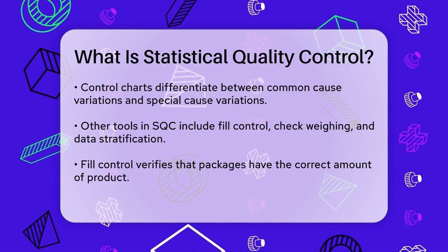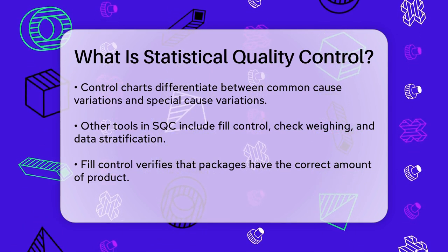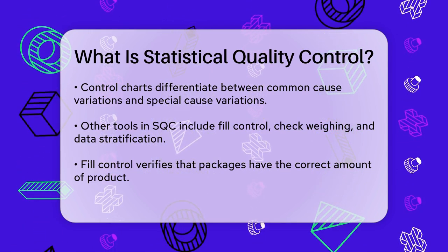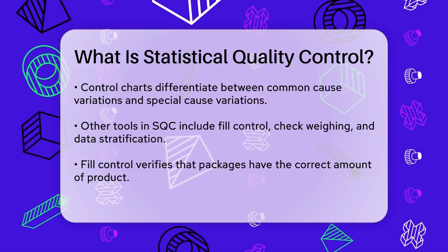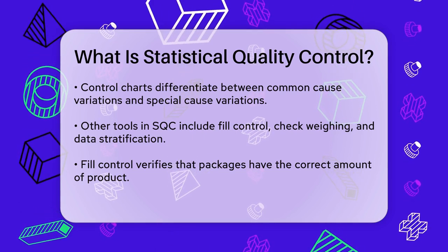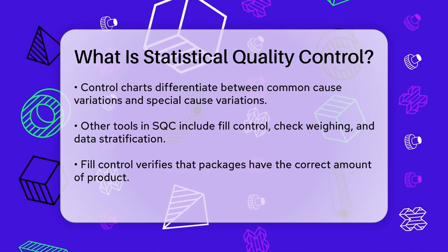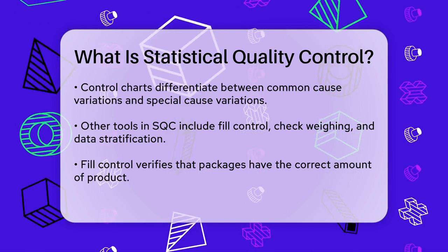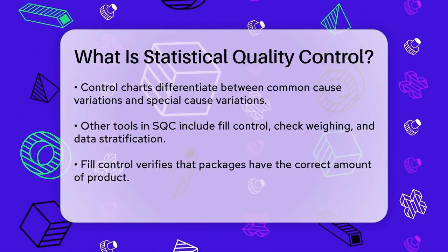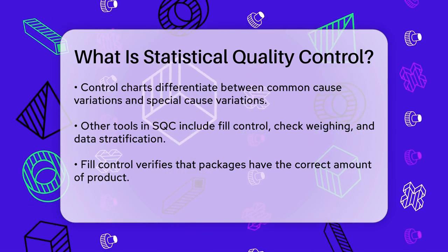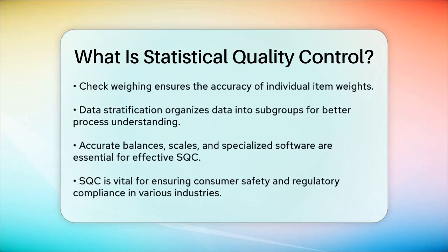In addition to control charts, SQC includes other statistical tools like fill control, check weighing, and data stratification. Fill control ensures that packages contain the correct amount of product, while check weighing verifies the weight of individual items. Data stratification helps organize data into subgroups to better understand the process.